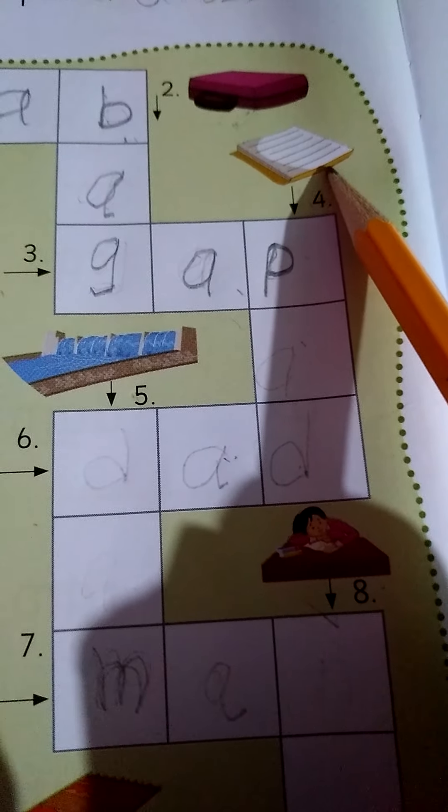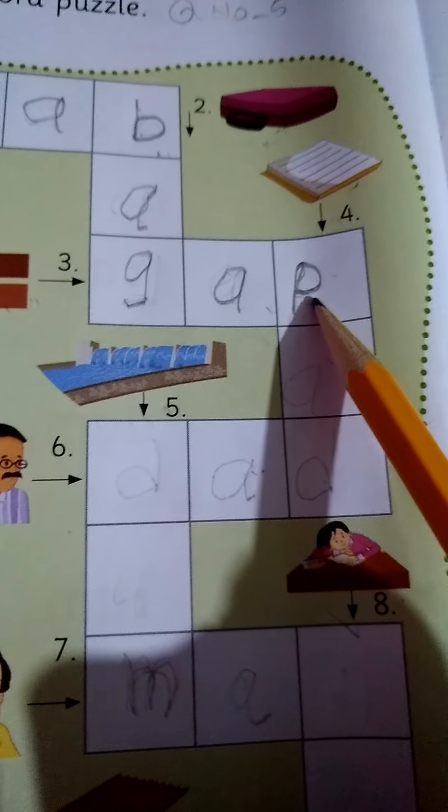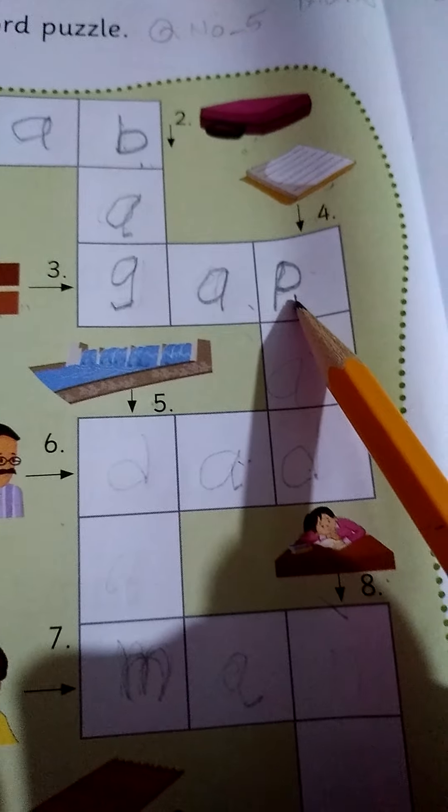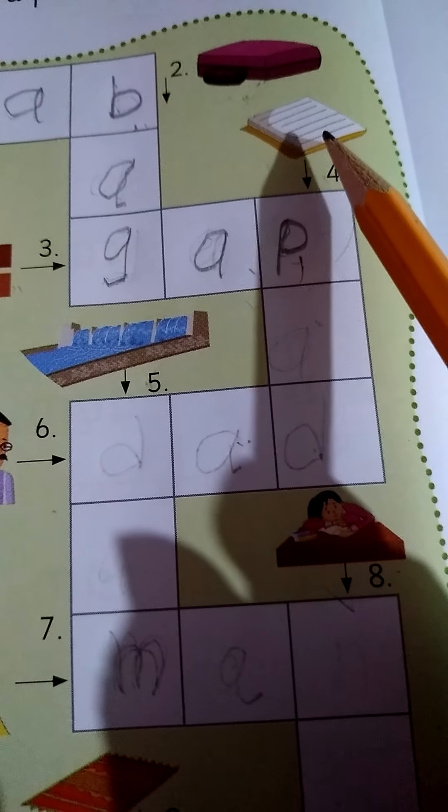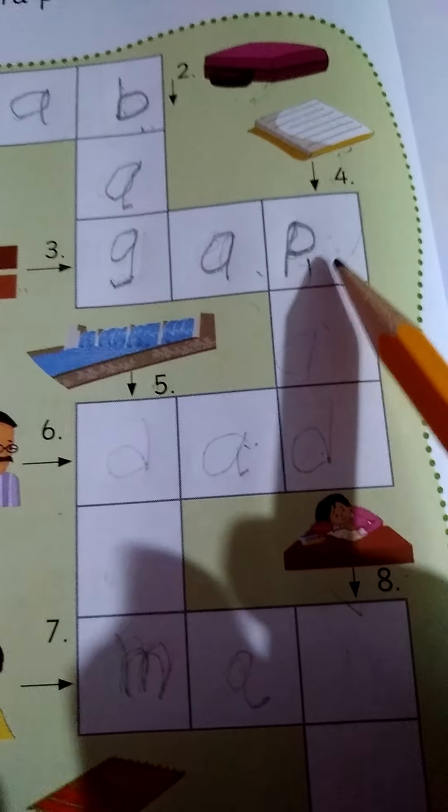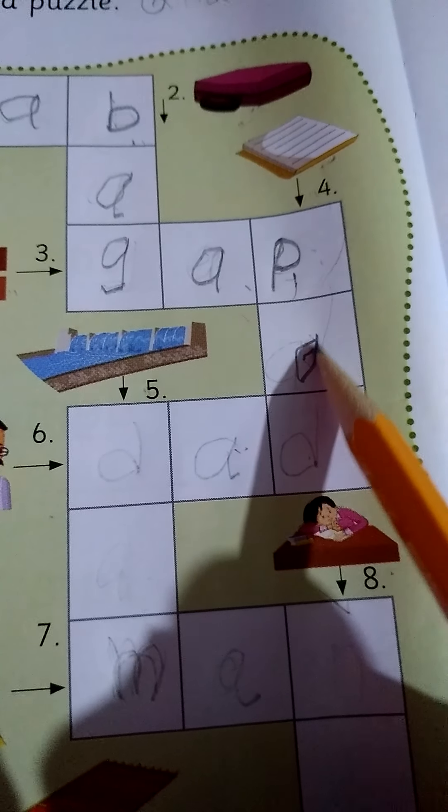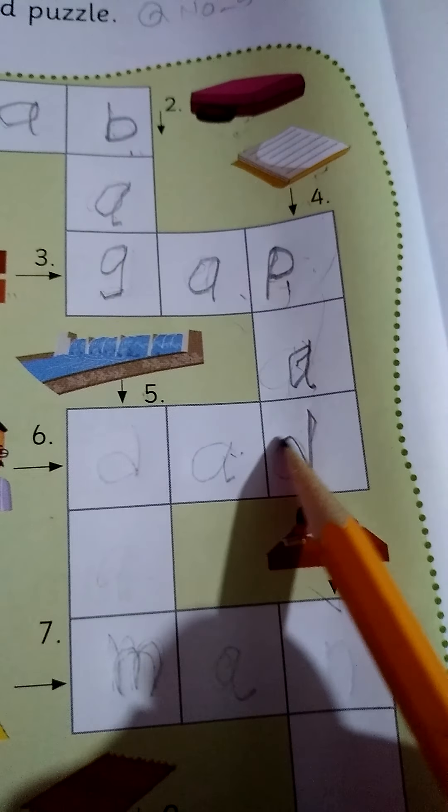This is pad. Already P right here. We wrote here P. So pad spelling P A D pad. P A D pad.